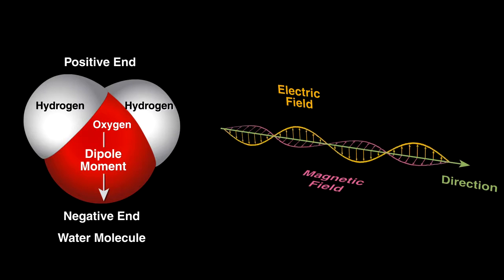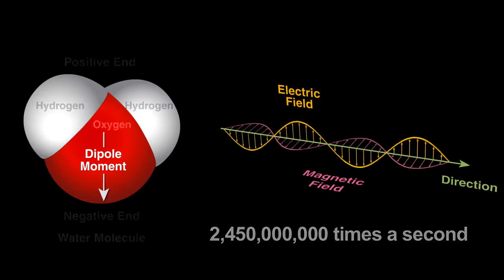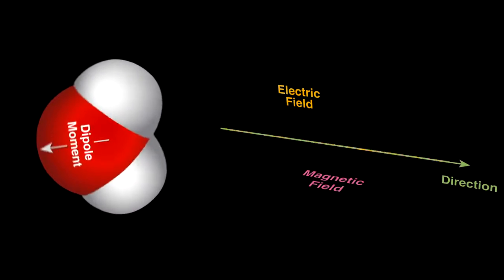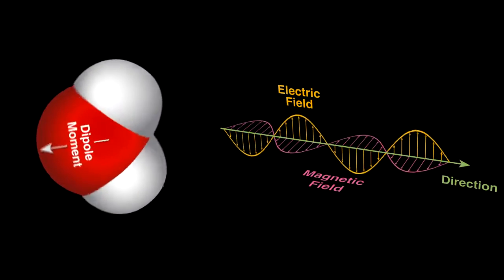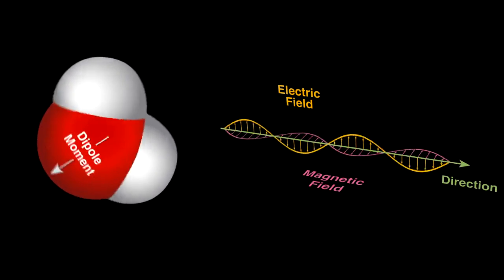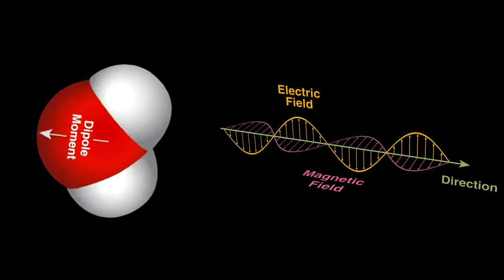For this oven, the direction of the fields change 2.45 billion times per second. Water will try to align with the radiation's electric field. The changing field rocks the water molecules back and forth rapidly, and molecular friction from this creates heat as the motion disrupts the hydrogen bonds between neighboring water molecules.